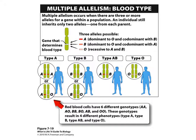Here's another picture of those combinations. Type A has two possible genotypes. Type B blood has two possible genotypes. Type AB blood has only one possible genotype. And type O blood has only one possible genotype.